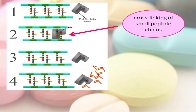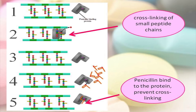When penicillin is present, it binds to the penicillin binding proteins and inhibits its activity. By inhibiting the activity of this enzyme, penicillin prevents the formation of peptide bonds, thus making the cell wall less strong. This loss of cell wall integrity causes the bacteria to leak out its cellular contents and perish.